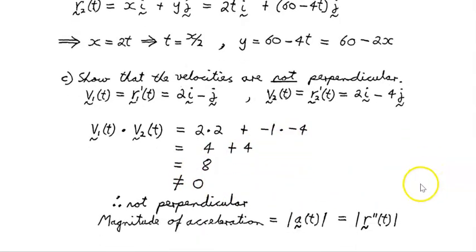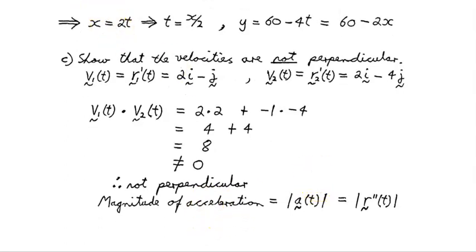The magnitude of the acceleration is always a scalar extracted from the acceleration vector, since acceleration is a vector quantity with both magnitude and direction. To extract just the magnitude, we take the absolute value of the acceleration vector — the absolute value of the second derivative of the position vector — just as we did for speed.